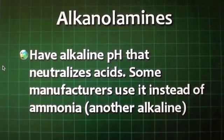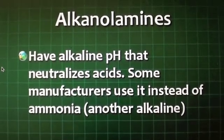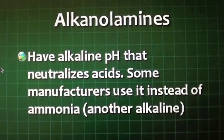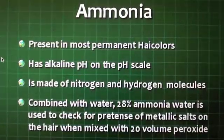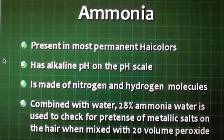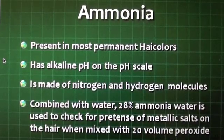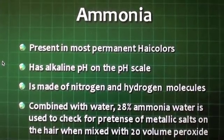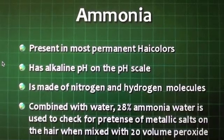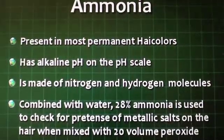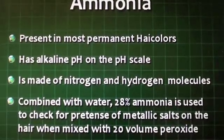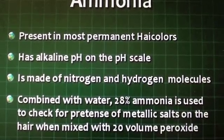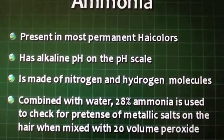Alkalinamines have an alkaline pH that neutralizes acids. Some manufacturers use them instead of ammonia, which is another alkaline. Ammonia is present in most permanent hair colors and has an alkaline pH on the pH scale. Ammonia is made of nitrogen and hydrogen molecules. When combined with water, 28% ammonia is used to check for the presence of metallic salts on hair when mixed with 20-volume peroxide.